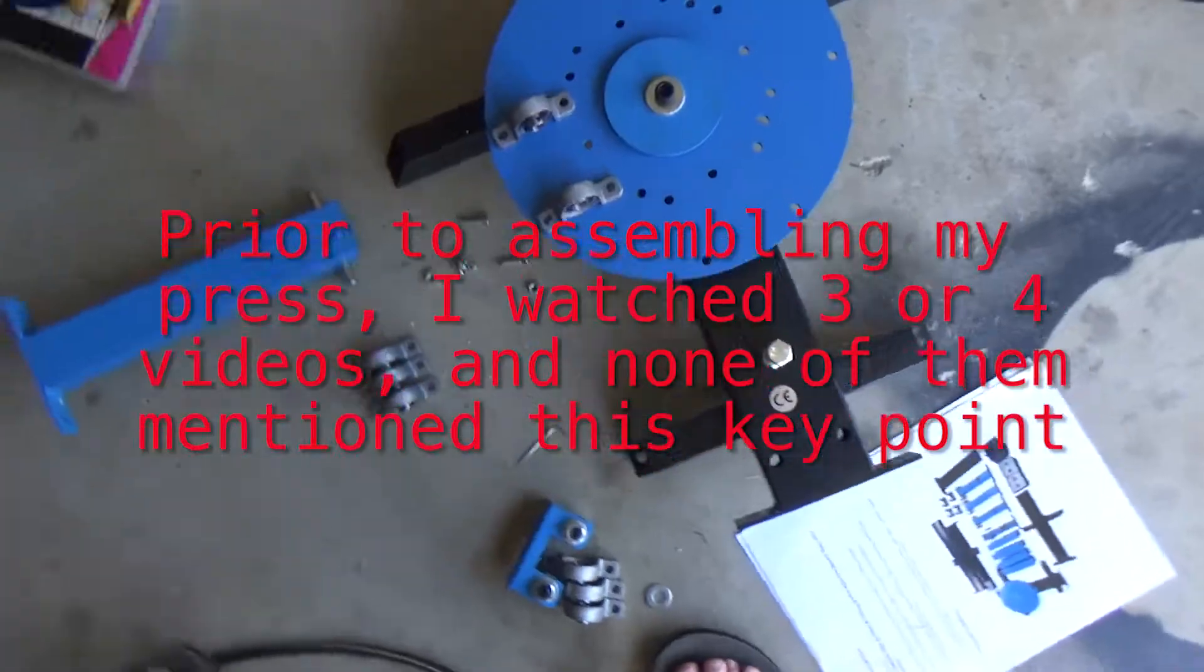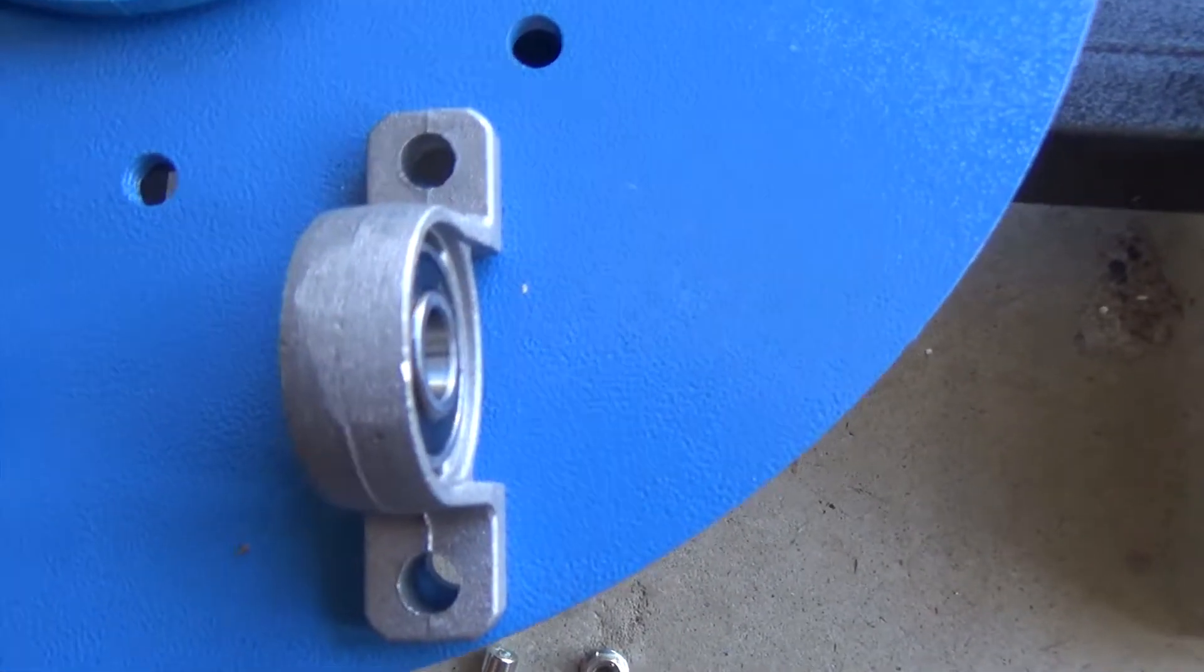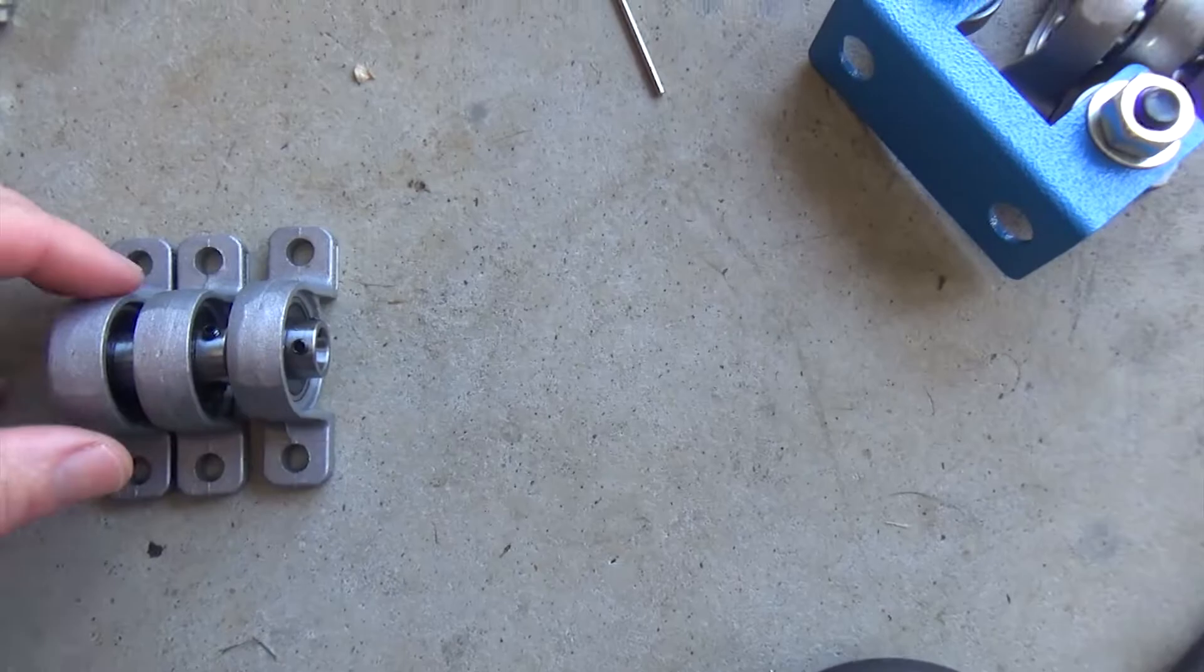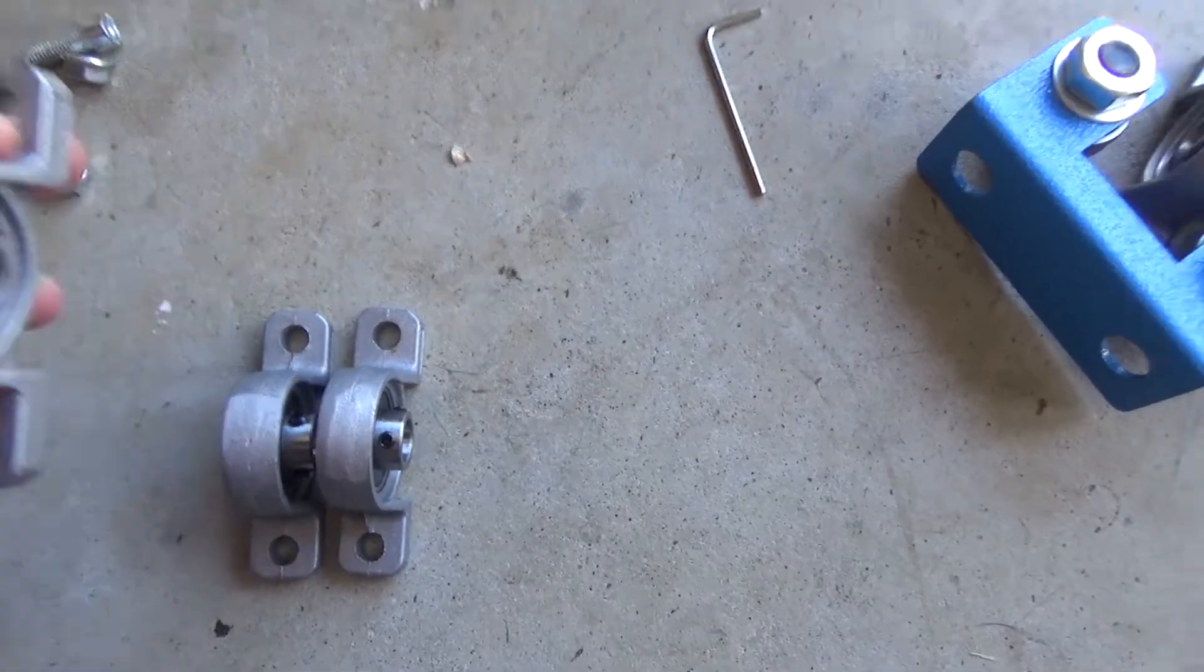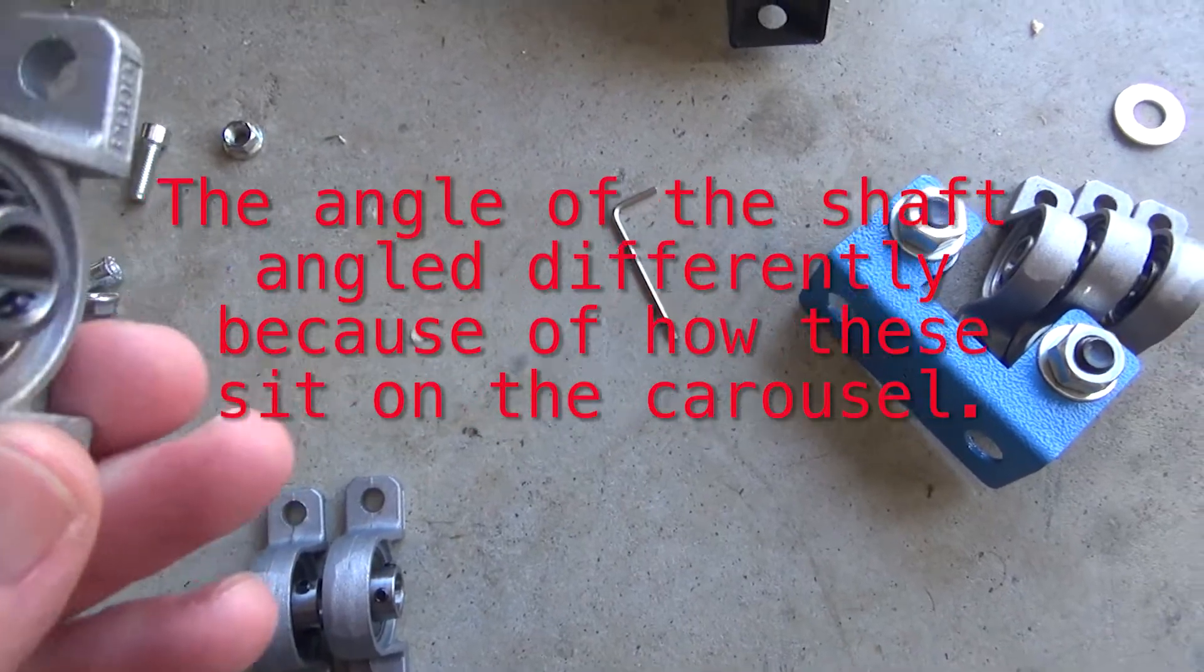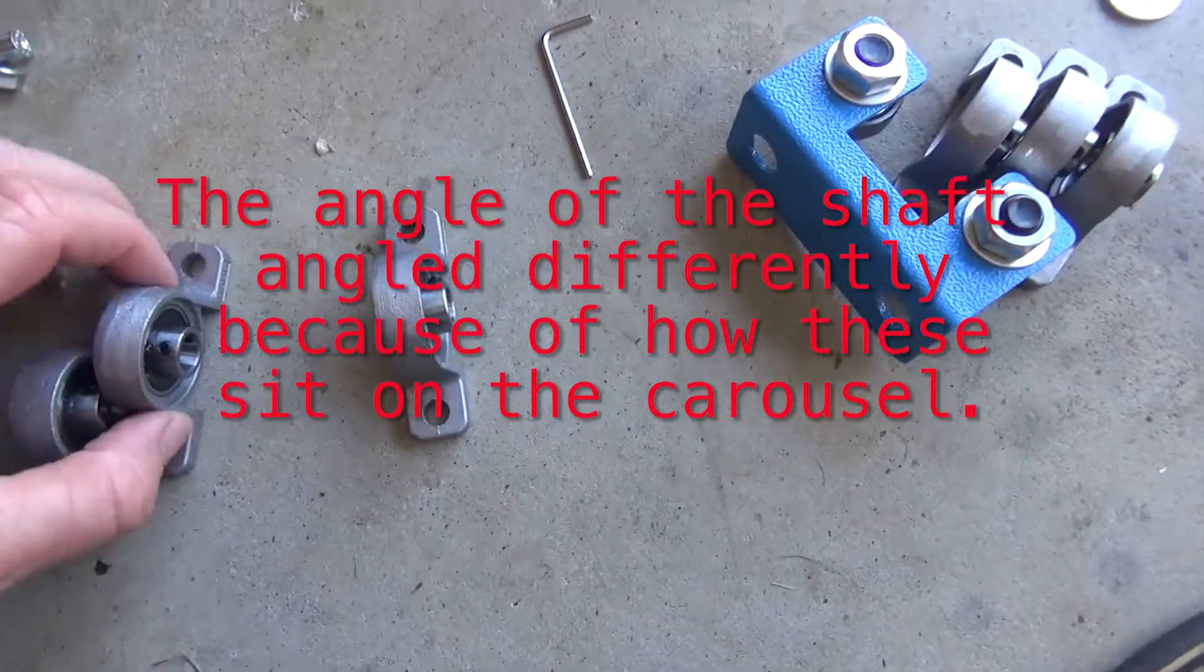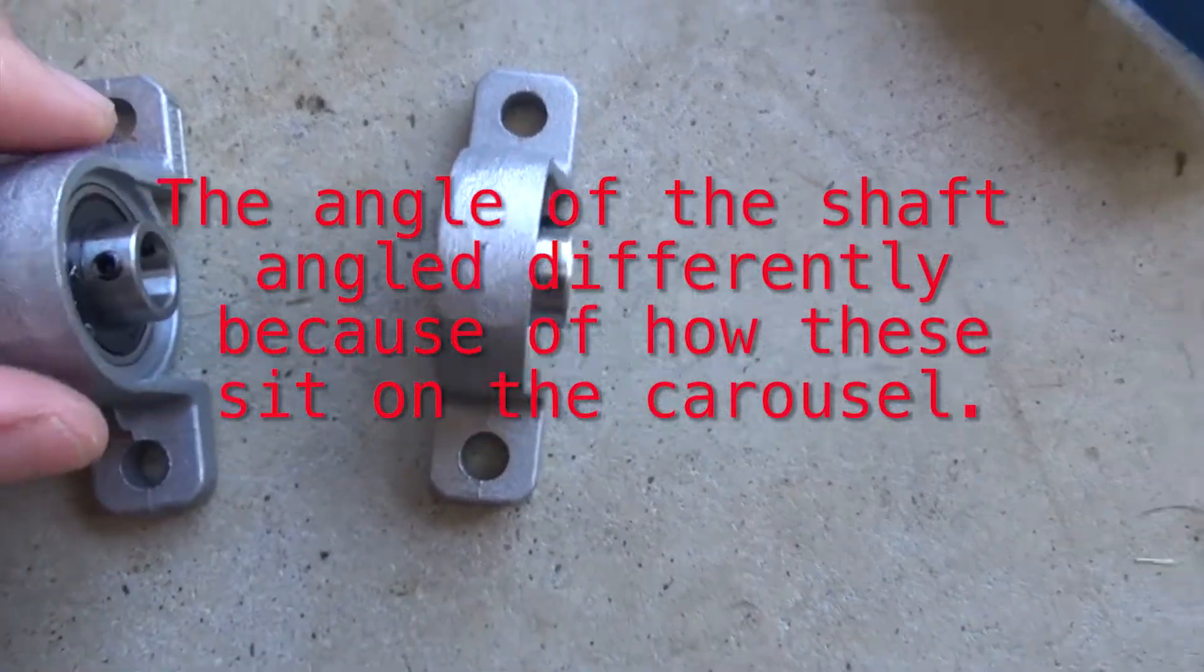So one other key thing I've noticed with these bearings - it's probably a bit hard to see on camera, but you've actually got four of them. If you look real closely, the angle of this bearing is actually angled one way. So to exaggerate, they're sort of angled like that.